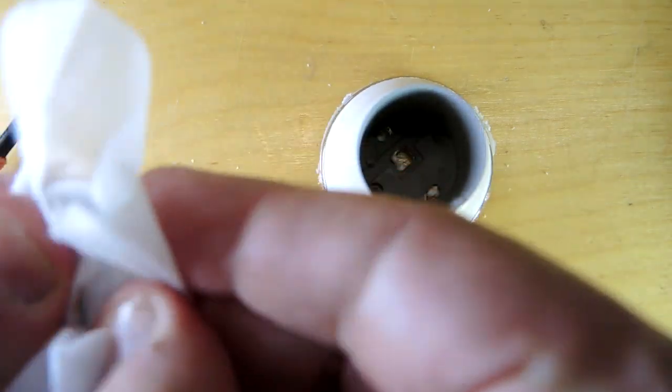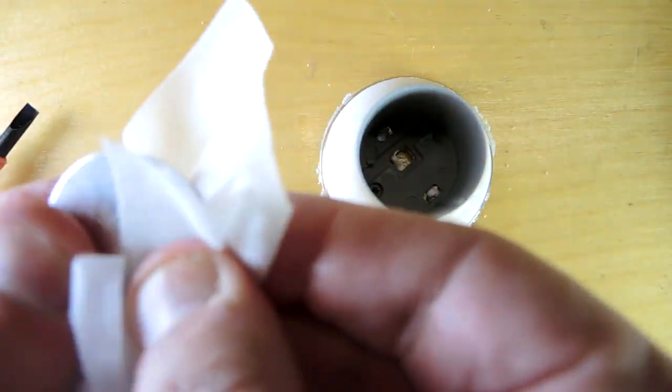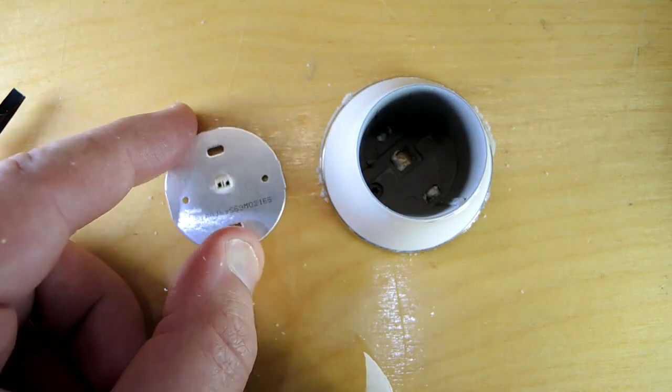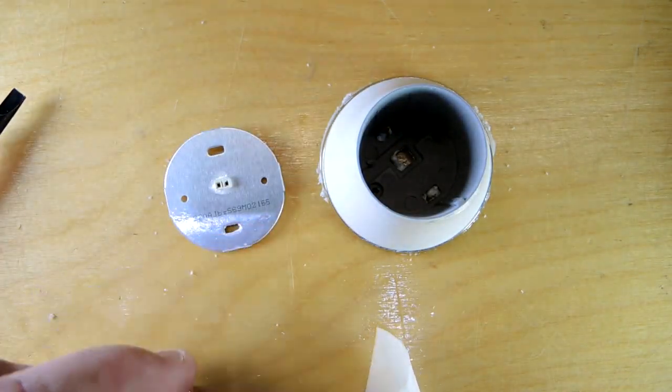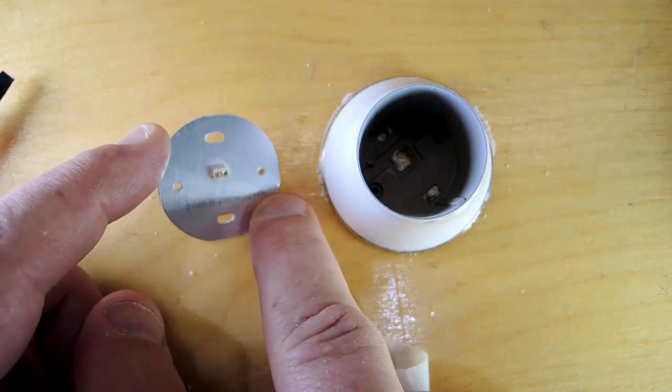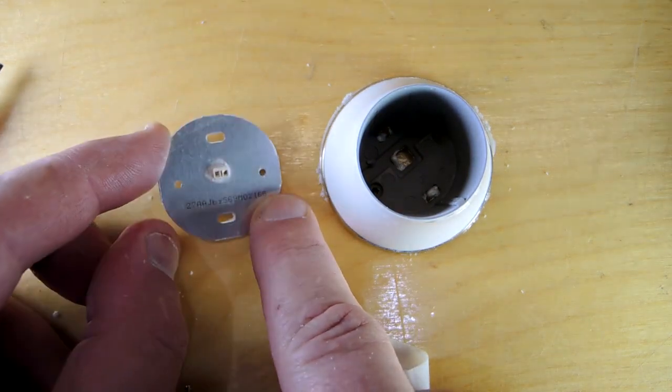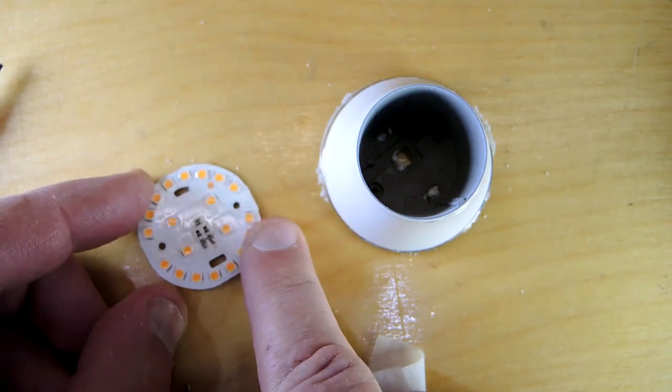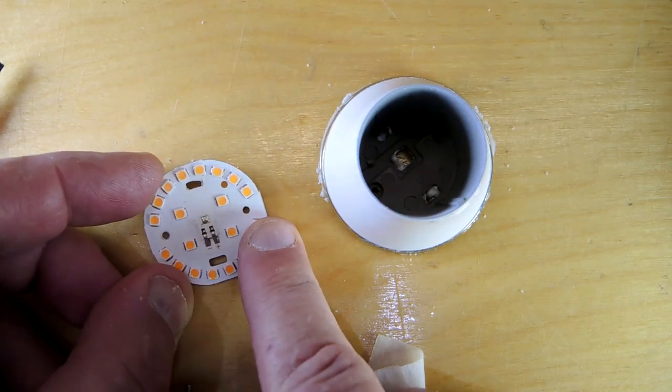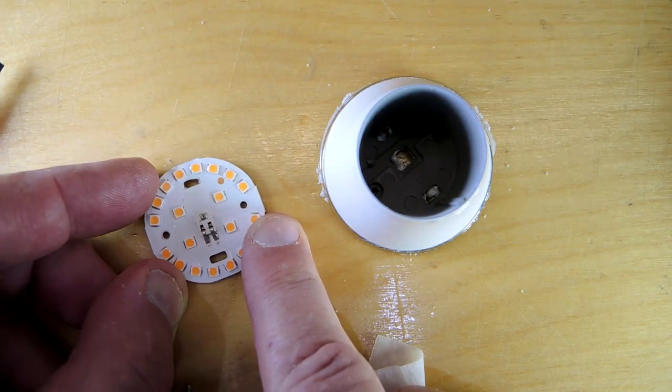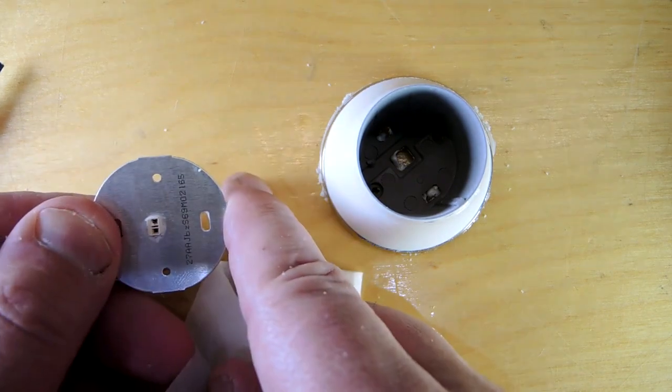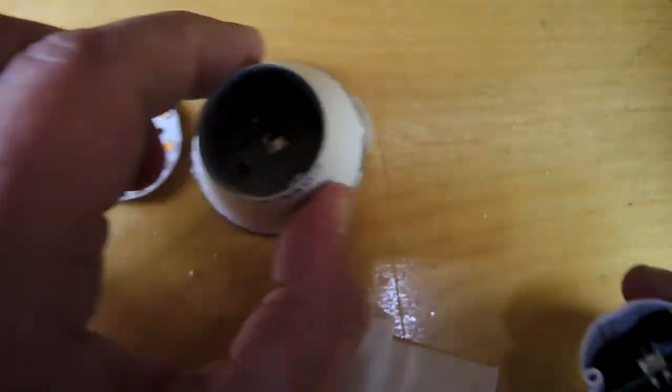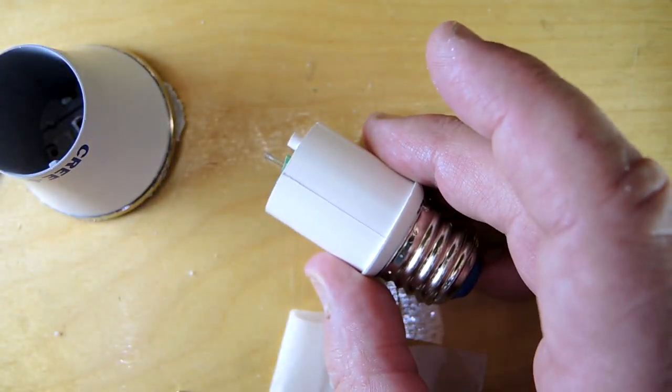Let's clean off this thermal compound and see if we can find some markings on the circuit board. It's all white solder mask on the top, so there's no indication as to who's made this circuit board. There's a bit of information here. There's some text which has been ink printed. It probably gives some traceability to the vendor as to what this circuit board is. No markings yet that this is a Cree design, just some generic text.